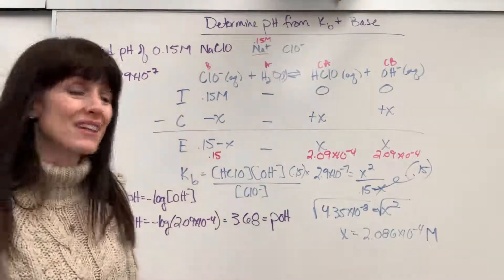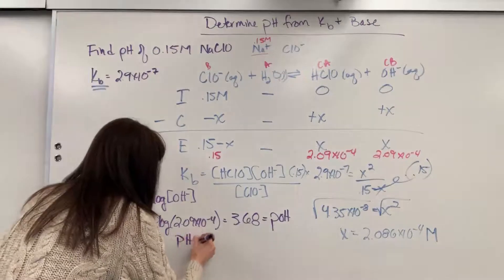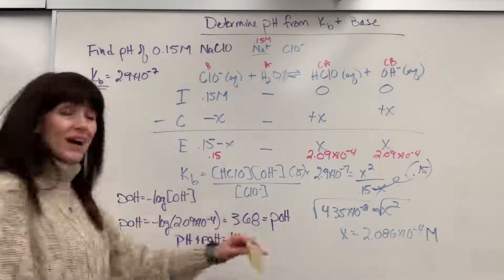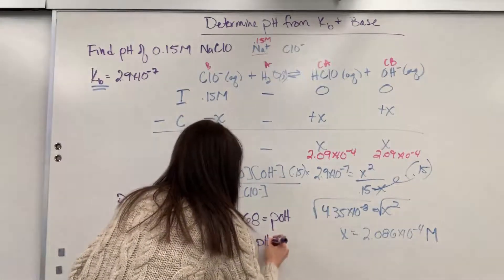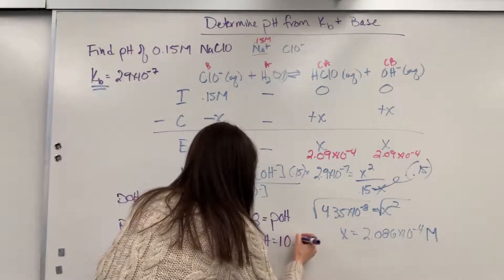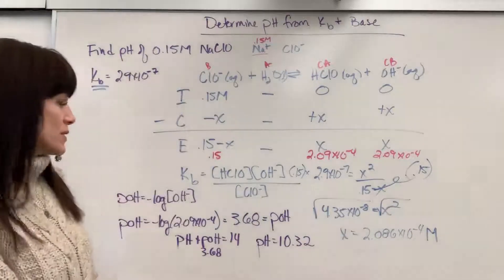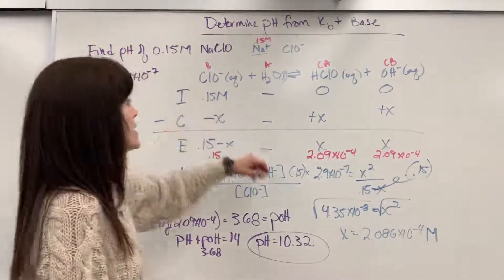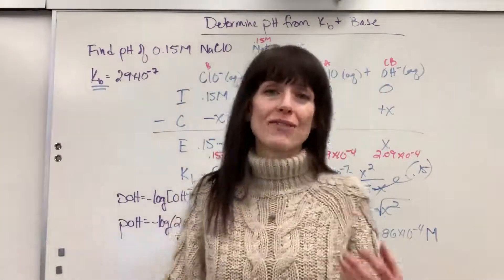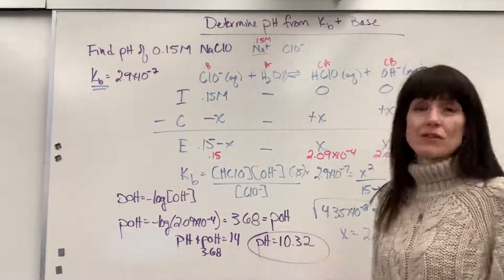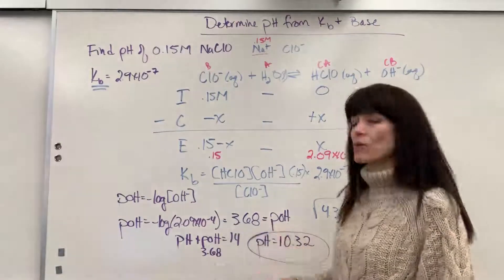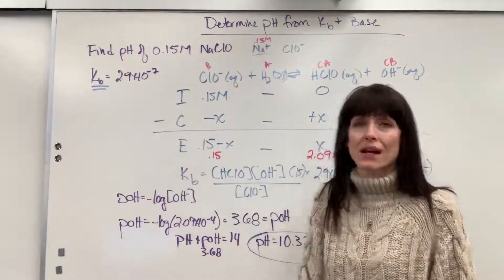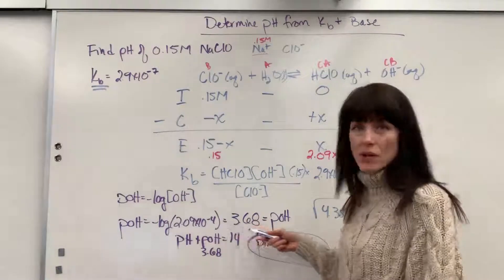There's one last, easy, tiny little step. We've got to bring that to pH. pH plus pOH equals 14. So if I plug in that 3.68, subtract that from 14, the pH is going to be 10.32. It should be a base because we had a base react with water to produce that hydroxide. So we're going to have a greater concentration of hydroxide than we do hydrogen. So it should be above a pH of 7. If we add bleach to water, it's not going to make an acidic solution. It will make a basic solution.